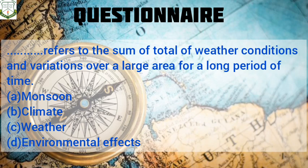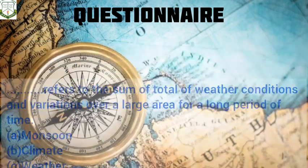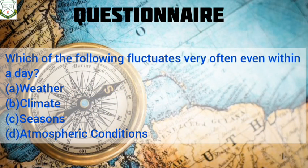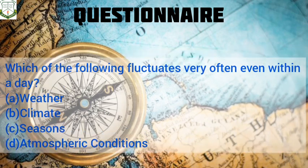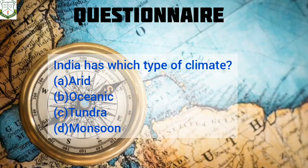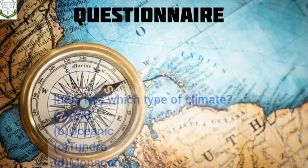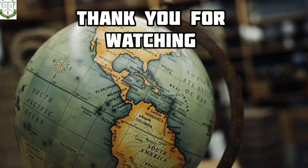Let us do some short questions. First: dash refers to the sum total of weather conditions and variations over a large area for a long time period — is it monsoon, climate, weather, or environmental effects? Second: which of the following fluctuates very often even within a day — weather, climate, seasons, or atmospheric condition? Third: India has which type of climate — arid, oceanic, tundra, or monsoon? Answer all these questions in the comments. Thank you for watching.